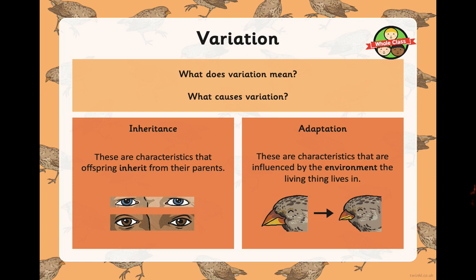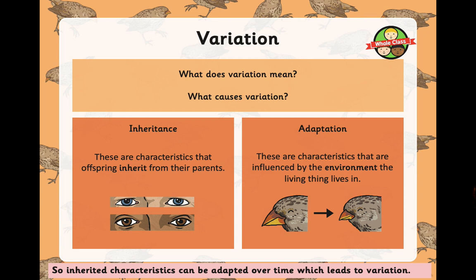If you've done your research on Charles Darwin, you'll know that he studied the finches in the Galapagos Isles — the beaks of the finches were different shapes and different sizes depending on what they were eating, what they were preying on. That was an adaptation influenced by the particular environment where they were getting their food. So there's a variation — a difference — between two finches based on the environment they have adapted to. Inherited characteristics can be adapted over time, which leads to variation within a species.